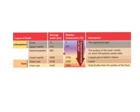The lower mantle, the biggest layer, goes up to 3700 degrees Celsius. The outer core goes to 4300 degrees Celsius, and the inner core goes to 7200 degrees Celsius, which is, in fact, hotter than the sun.